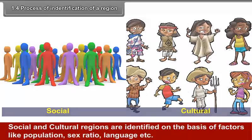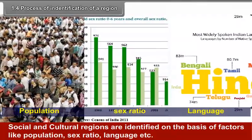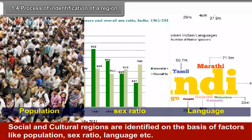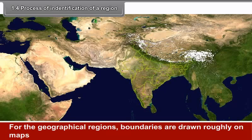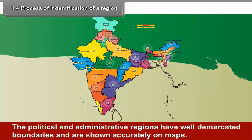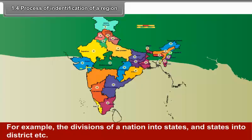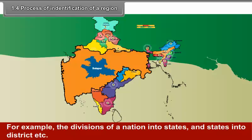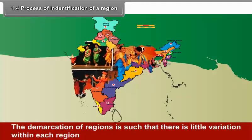Agricultural regions are formed according to crops and crop combinations. Social and cultural regions are identified on the basis of factors like population, sex ratio, language, etc. For geographical regions, boundaries are drawn roughly on maps because these boundaries are mostly in the form of transitional zones. The political and administrative regions have well-demarcated boundaries and are shown accurately on maps.